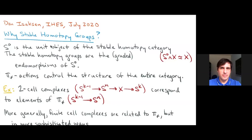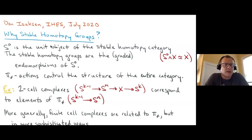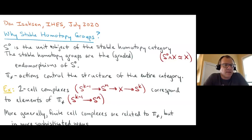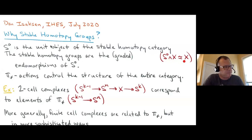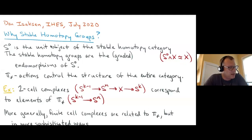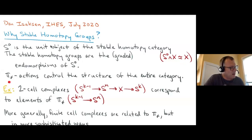I'm going to talk over the next three hours about stable homotopy groups. Let me begin with some classical background about the stable homotopy groups and why these are things we should care about computing. S0 is the unit object in the stable homotopy category — if you smash any spectrum X with S0, you just get X back. The stable homotopy groups are, by definition, the graded endomorphisms of S0, and as we know from many examples, the endomorphisms of the unit object control the structure of the entire category.